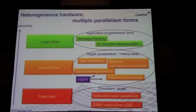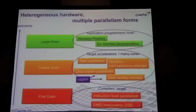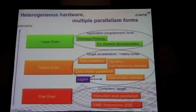At the finest grain, you find SIMD instructions — vector instructions like SSE, AVX, and others — and this is mostly a compiler problem; the compiler can take care of it for you. In the middle, there is task parallelism and data stream parallelism, which is the one that will take advantage of manycore. One of the issues with this parallelism is that sometimes it's in the application, sometimes it's not, because previous CPUs didn't require highlighting this kind of parallelism at a massive scale.